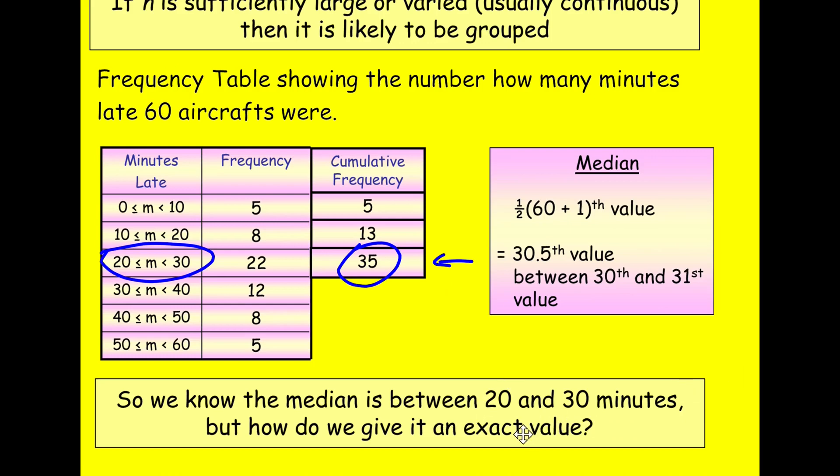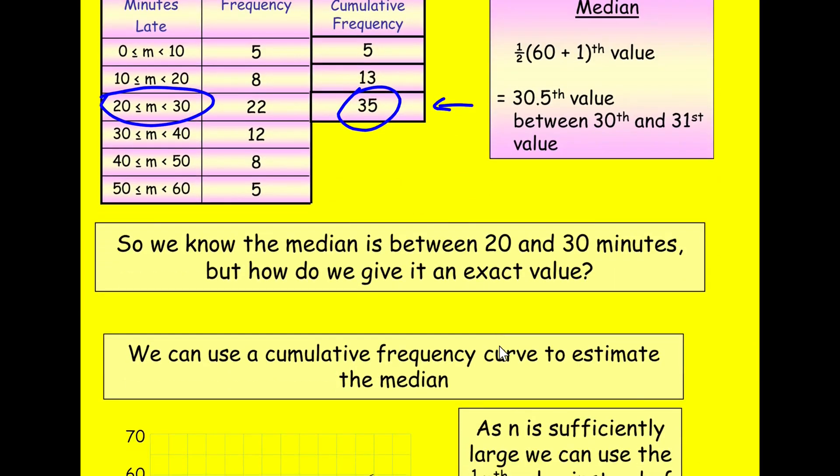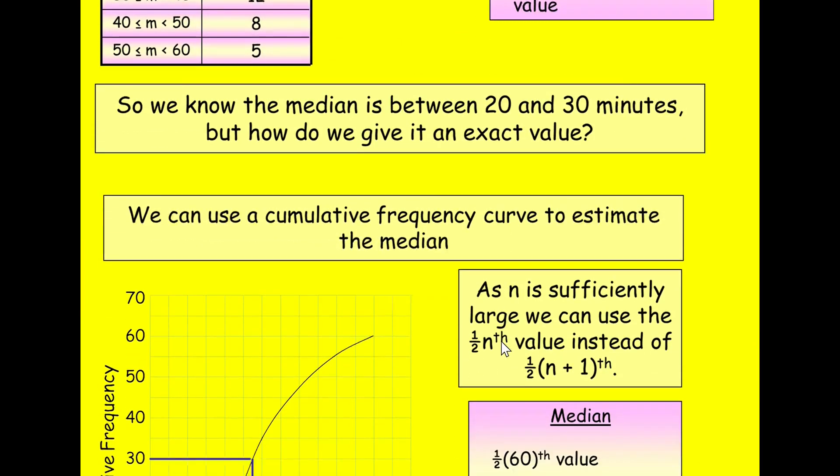How do we get an exact value? Like I said, that's for, to do it from just the table is a skill we don't cover for OCR, but we do have a way of doing it. And that is to construct a cumulative frequency table.